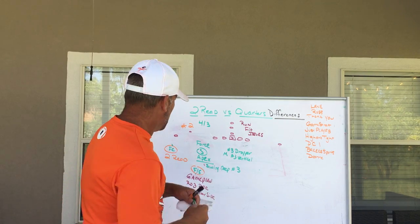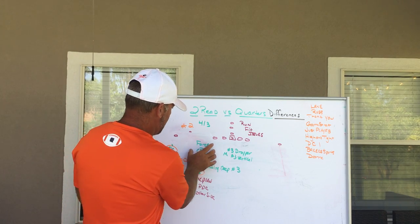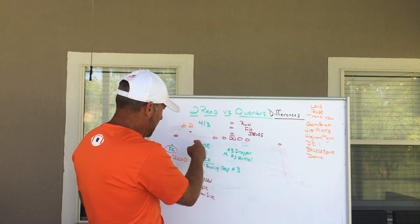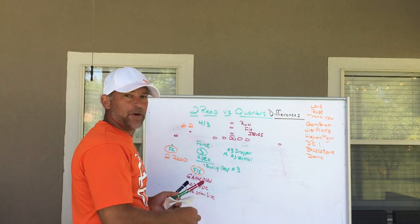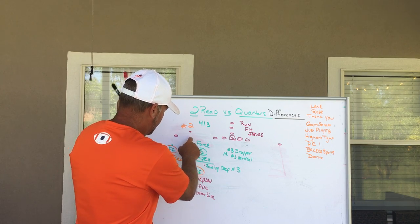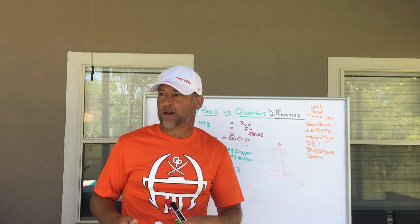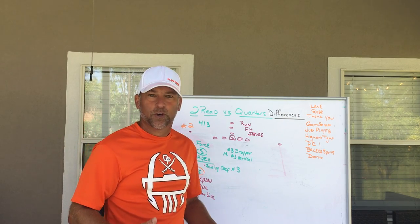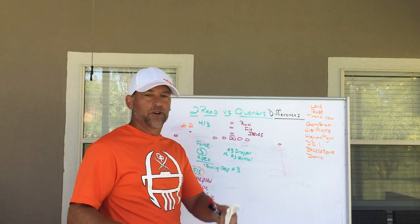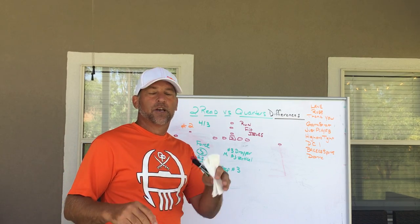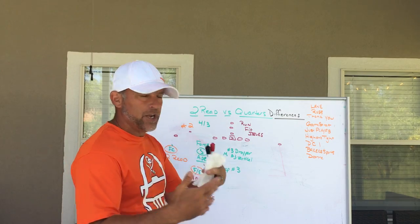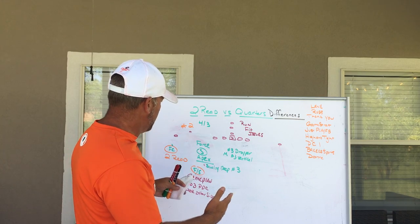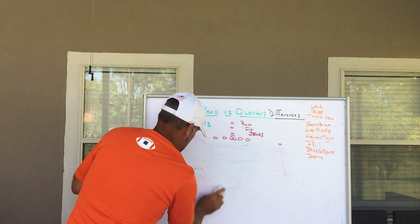What this does versus the run: with the apex Sam, he's underneath number two and closer to the box to help. The Will and the Mike can spill the ball to the Sam. If the Sam gets blocked by the number two receiver, the free safety will replace where the Sam was — natural crack replaceability. So as an adaptation and variation — an answer in the quarters toolbox — it allows us to be a quarters team and make a simple adjustment when teams go two removed.